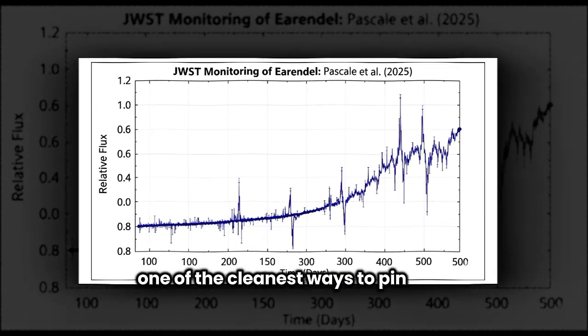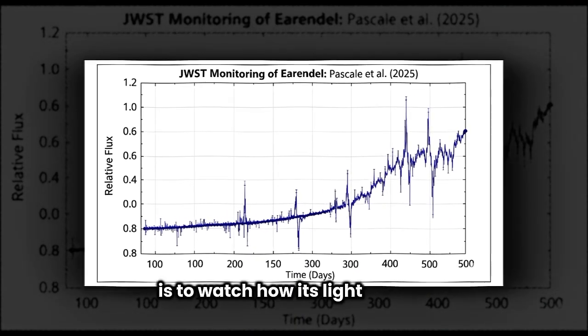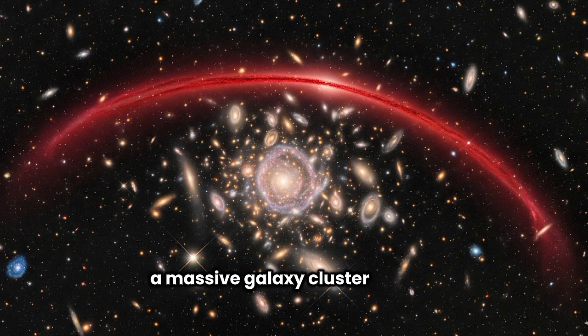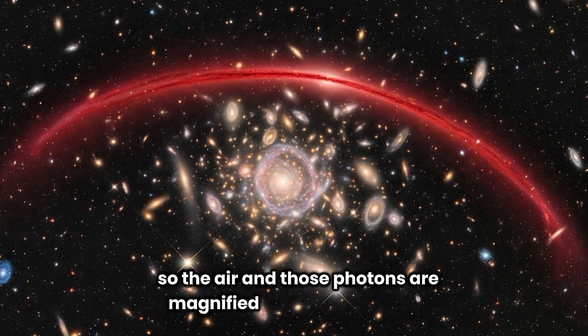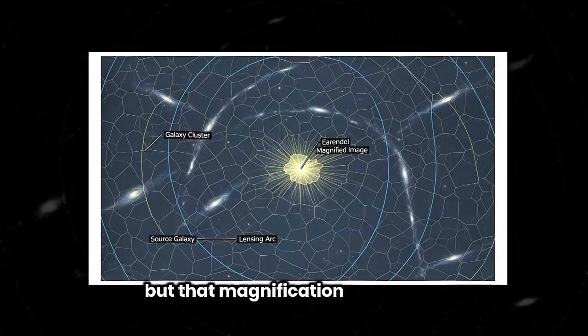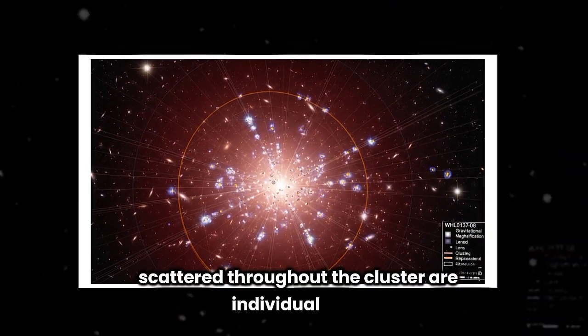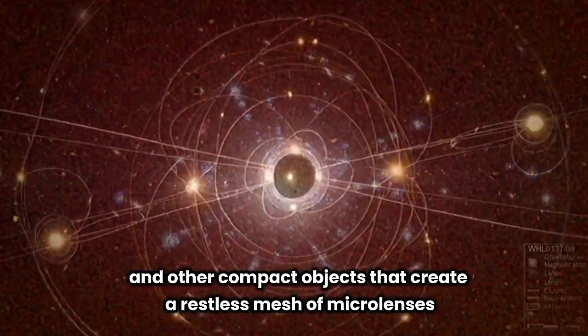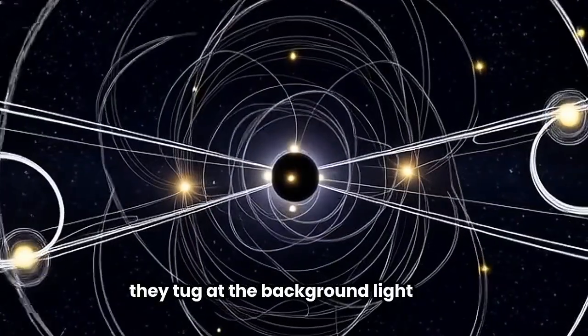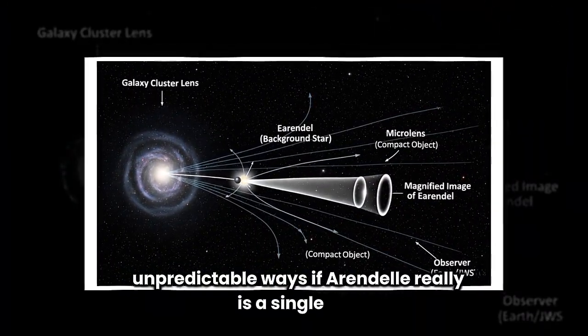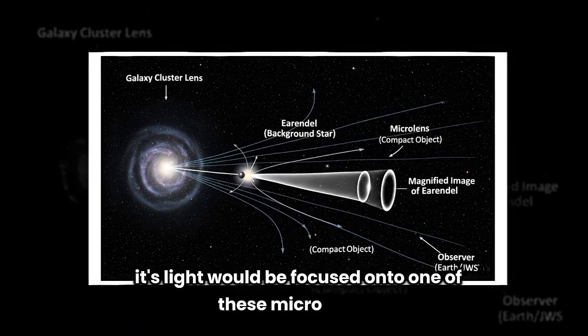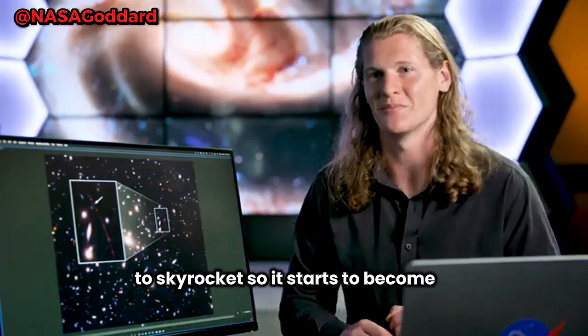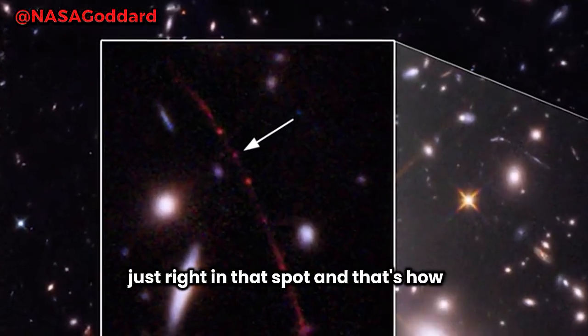One of the cleanest ways to pin down Earendel's true identity is to watch how its light behaves over time. The star owes its visibility to gravitational lensing, a massive galaxy cluster bending space-time so that Earendel's photons are magnified thousands of times. But that magnification isn't smooth. Scattered throughout the cluster are individual stars, stellar remnants, and other compact objects that create a restless mesh of microlenses. As they drift in their orbits, they tug at the background light in tiny, unpredictable ways. If Earendel really is a single star, its light would be focused onto one of these microlenses like a spotlight. Where the magnification starts to skyrocket, it becomes an incredibly high magnification just right in that spot, and that's how we're able to see this one star.